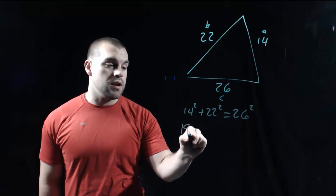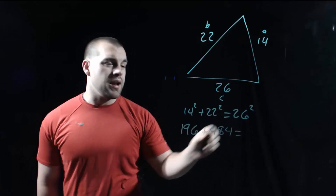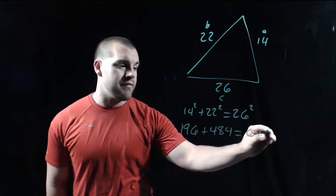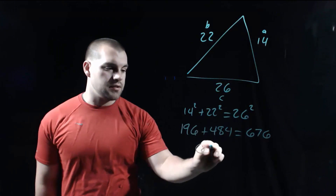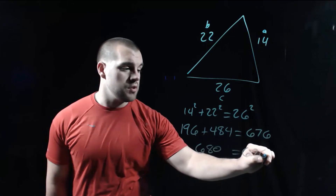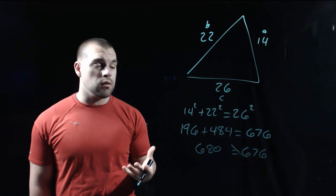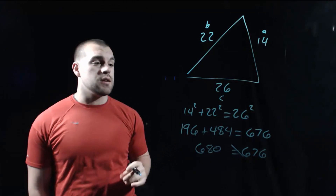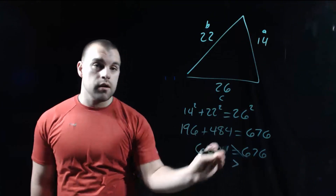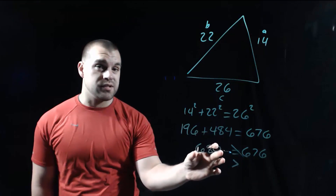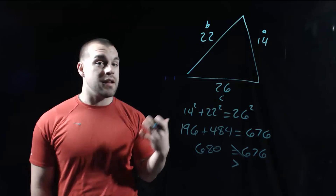14 squared is 196. 22 squared is 484. And on the right-hand side, 26 squared is 676. If we add up the left-hand side, we end up getting 680. On the right-hand side we've still got 676. These are not equal to each other, so I know this is not a right triangle. But the A squared plus B squared is bigger than the C squared — when we added those on the left-hand side, we got a bigger number than the C squared. If that happens, then your triangle is an acute triangle.